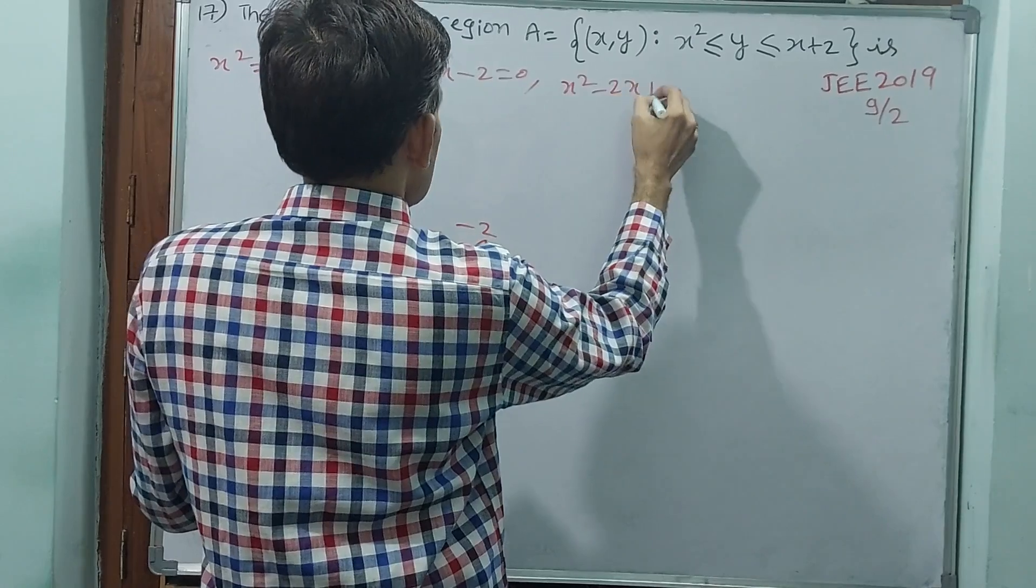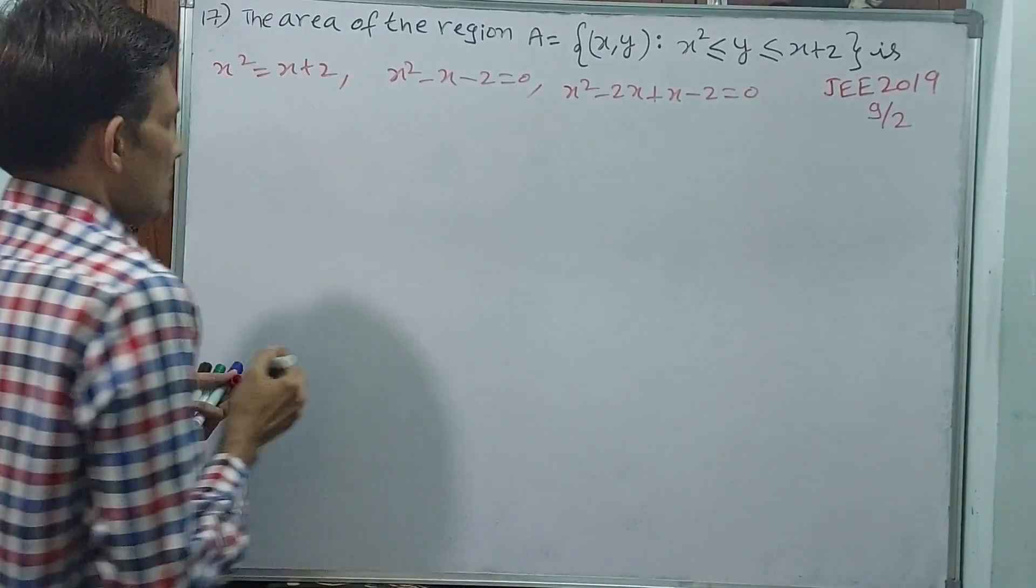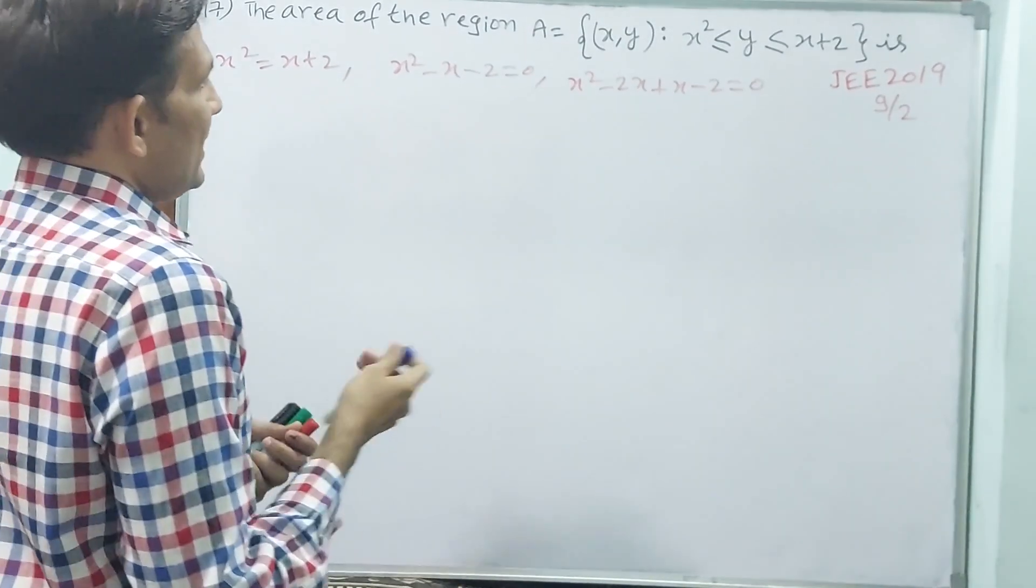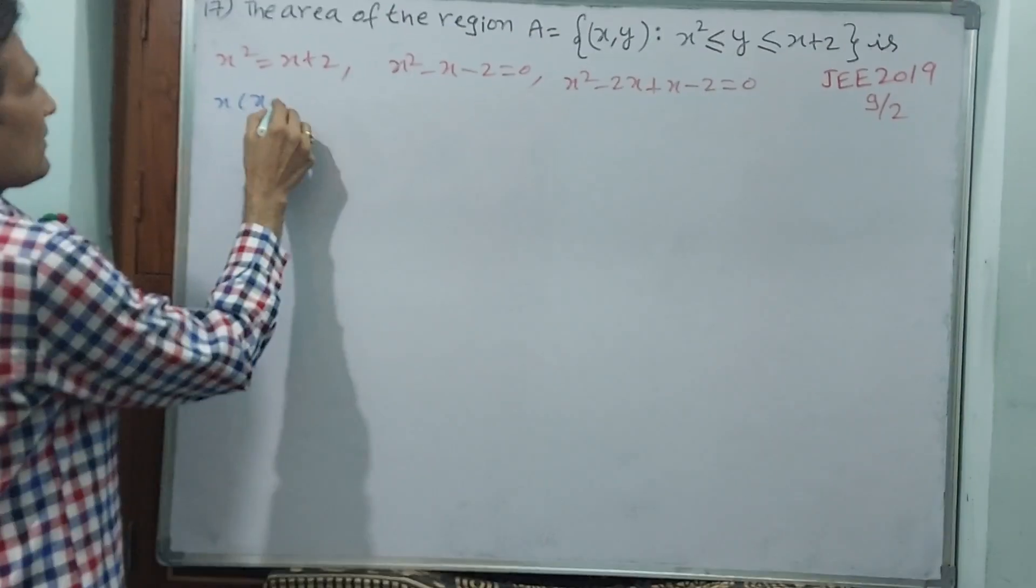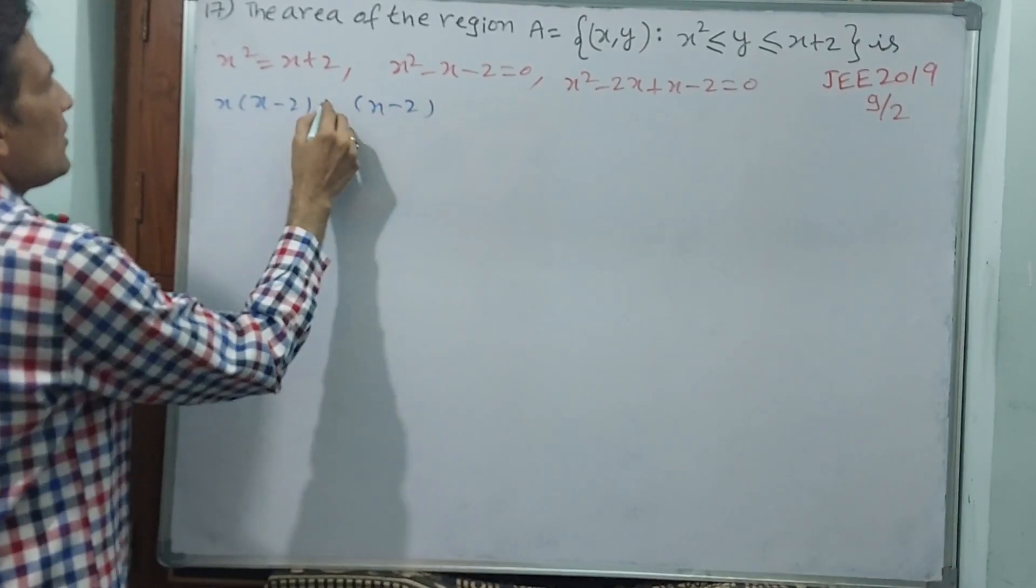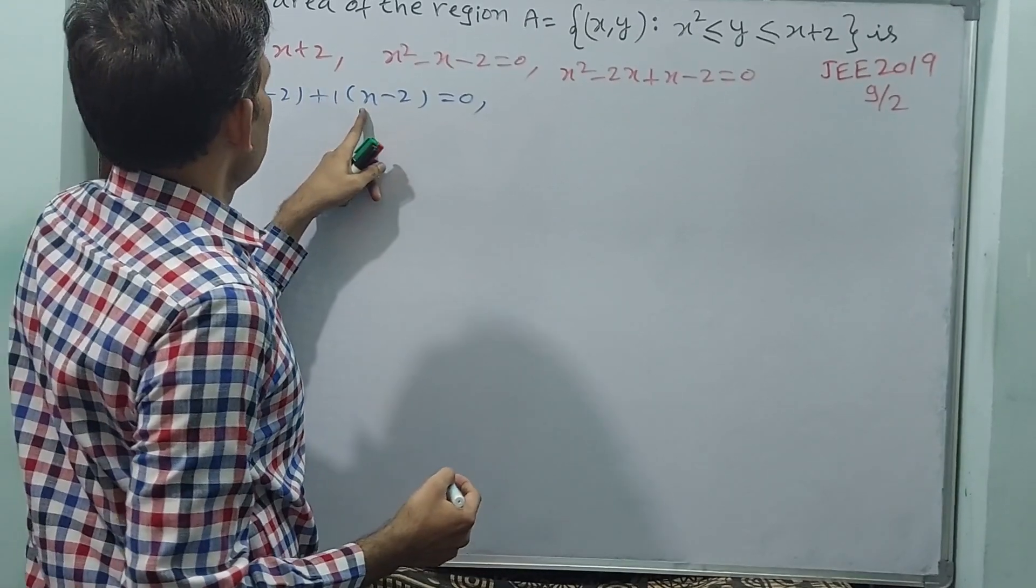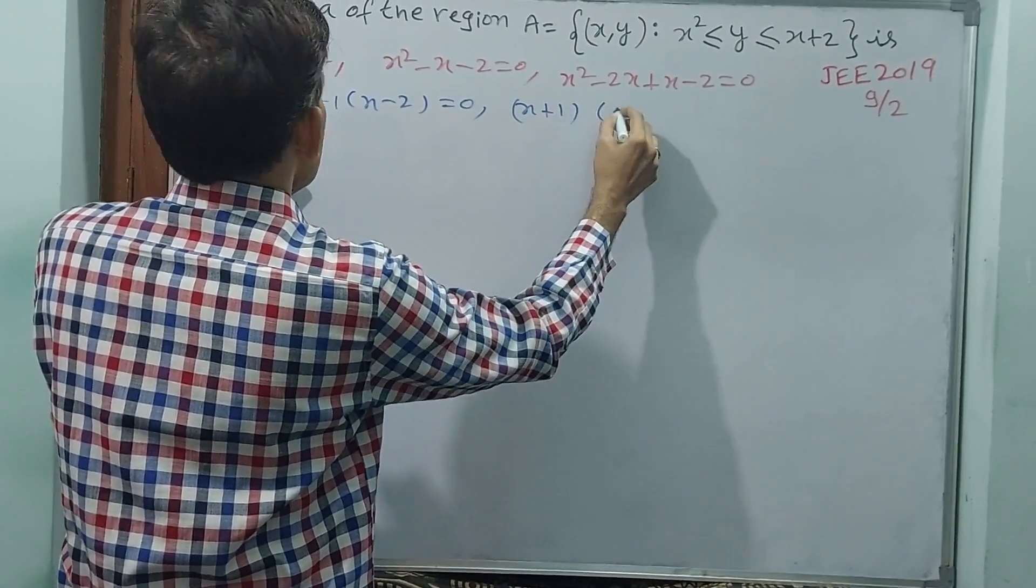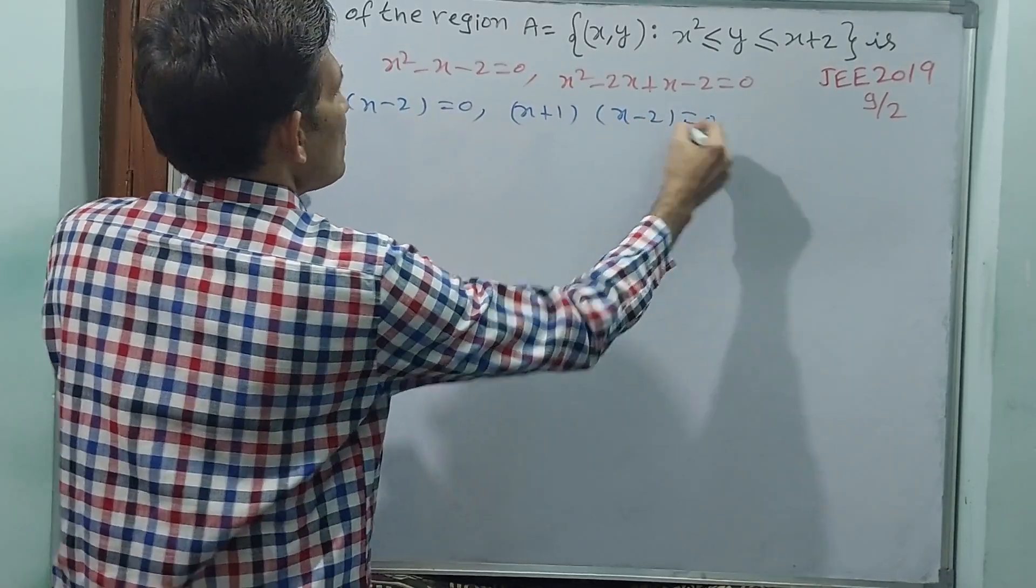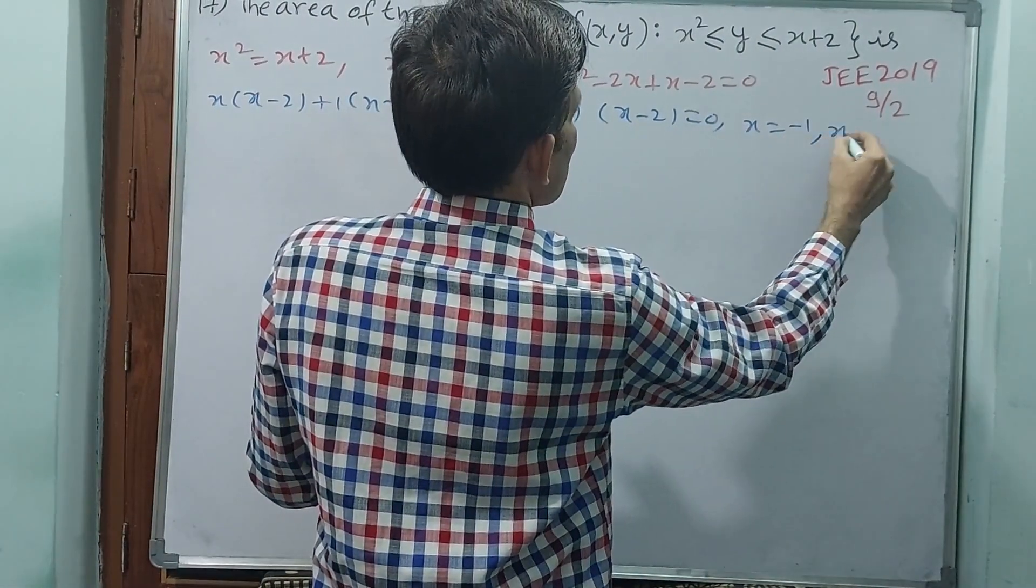x square minus 2x plus x minus 2 equal to 0. Then x into x minus 2, x minus 2 plus 1 equal to 0. And x plus 1 into x minus 2 equal to 0. x is equal to minus 1, x is equal to 2.